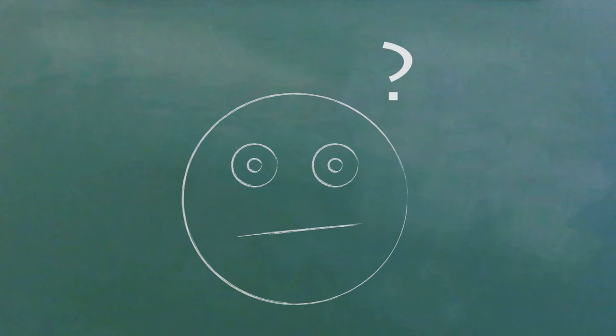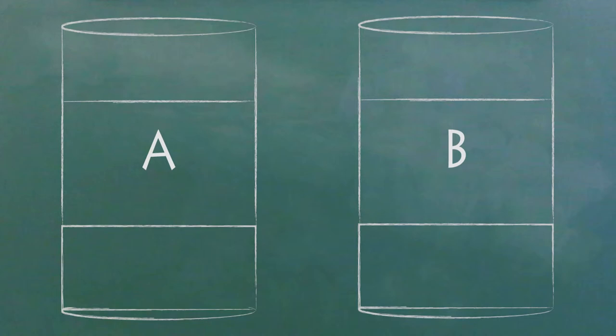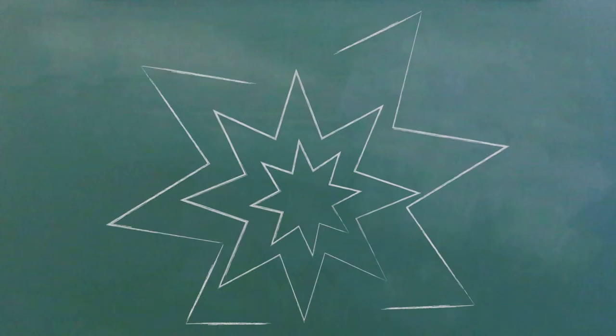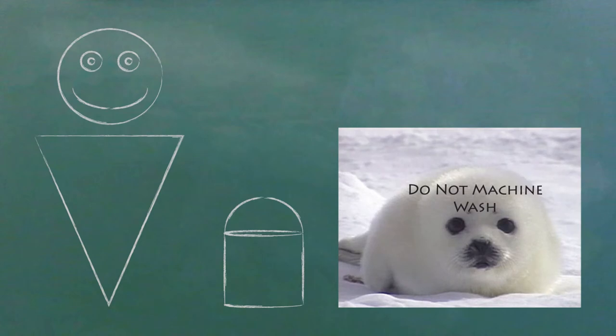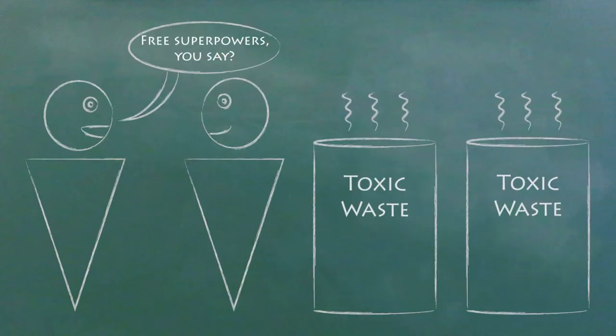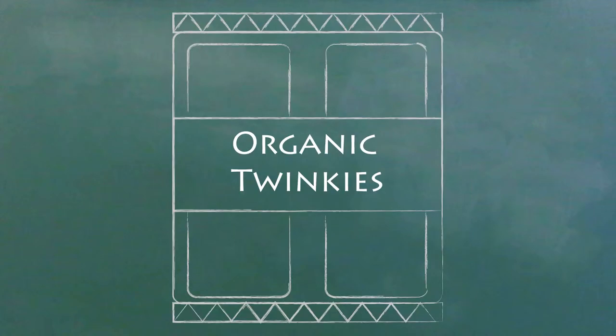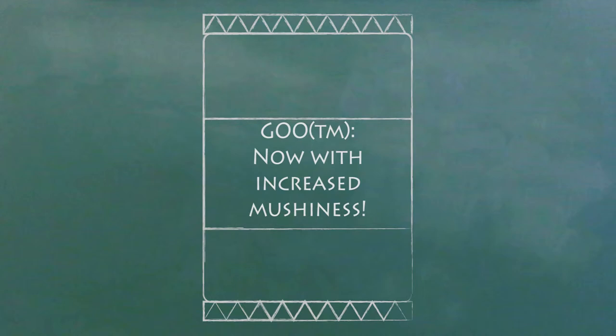When deciding what a synthetic substance is, the USDA considers many things, like the possibility that it will interact badly with other substances used in organic farming, how toxic the substance is, how long it takes to break down, and how hard it is to contain or clean up, what its effects are on human health and the environment, that the substance doesn't make the food less nutritious, and that the substance doesn't replace flavors, colors, or textures lost during processing, and how easily the substance can be replaced by another substance.